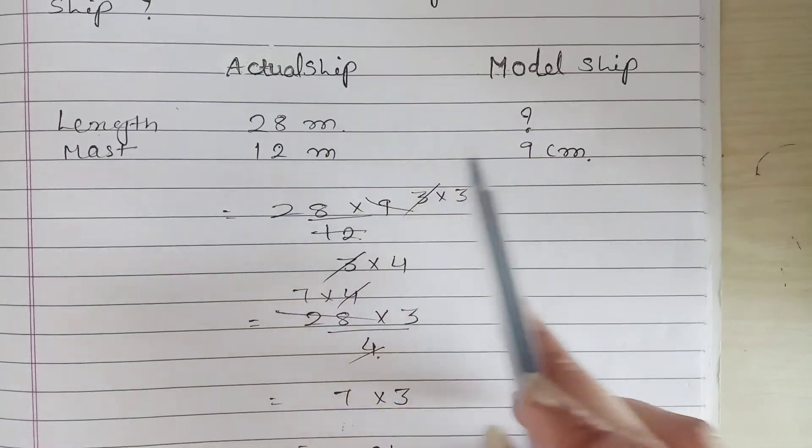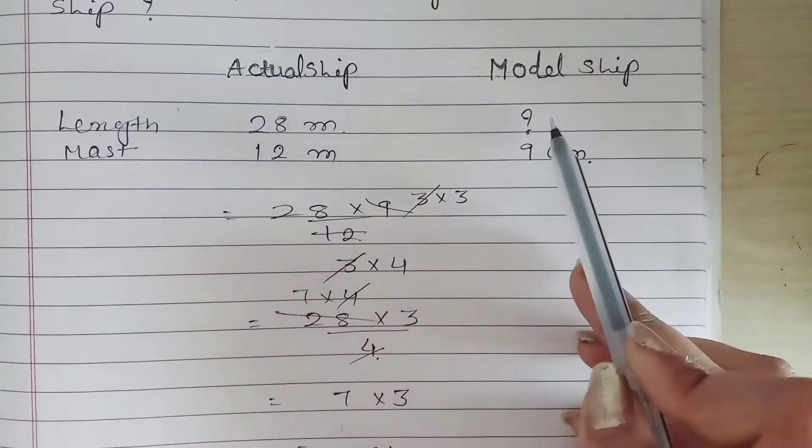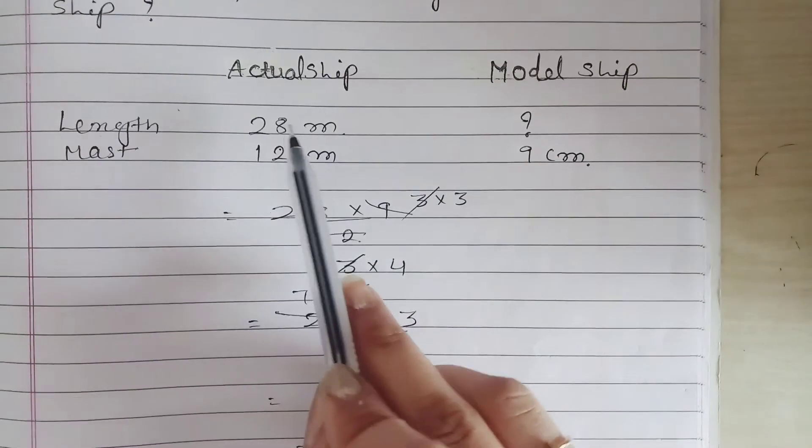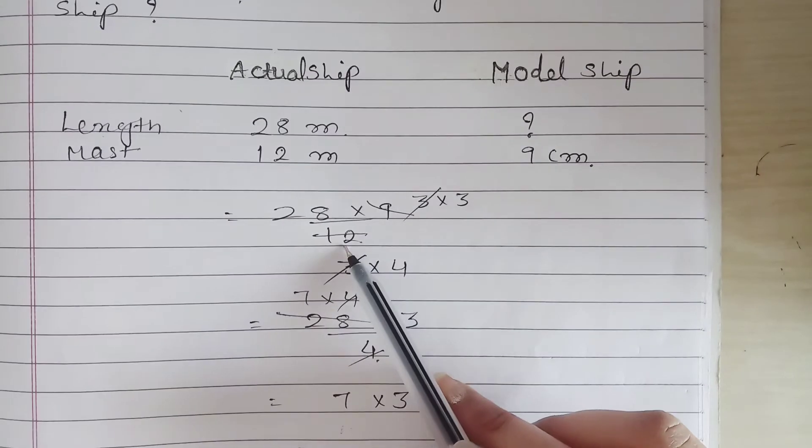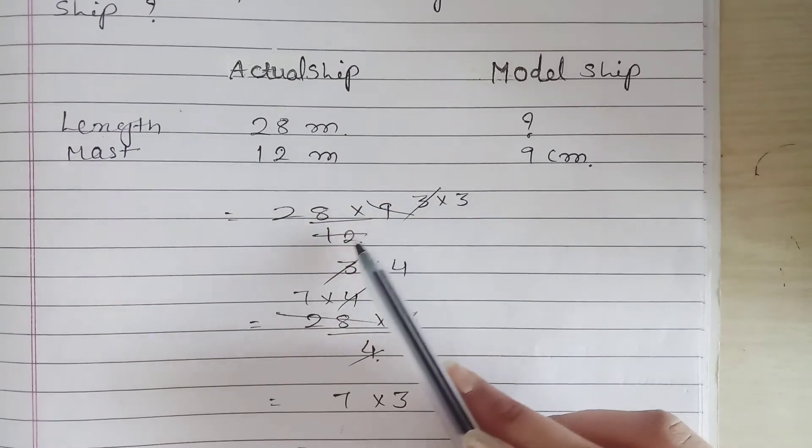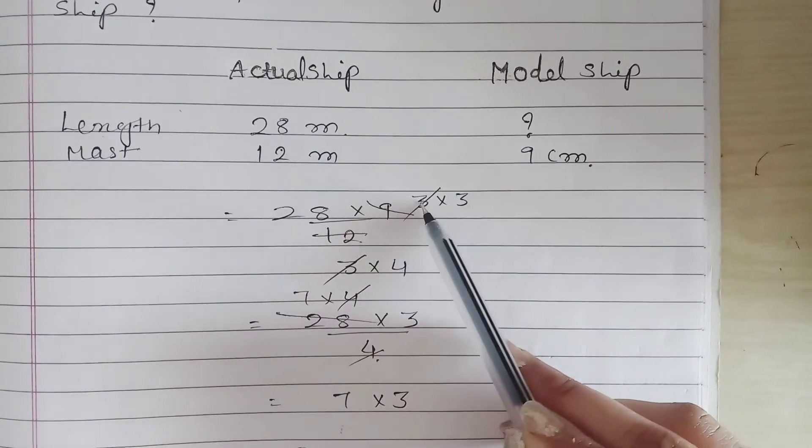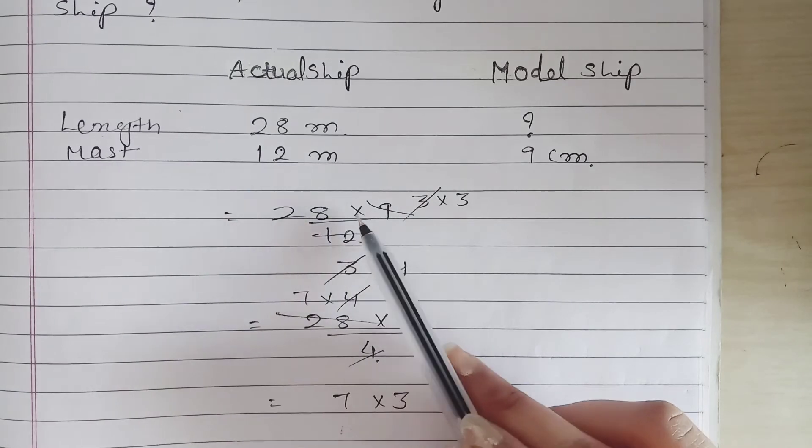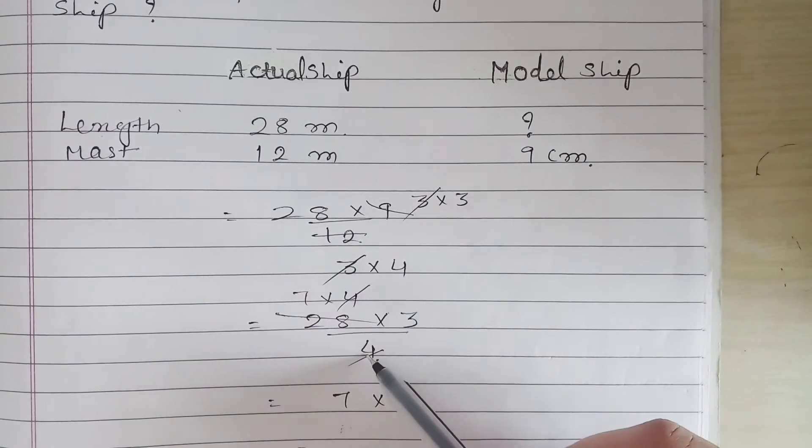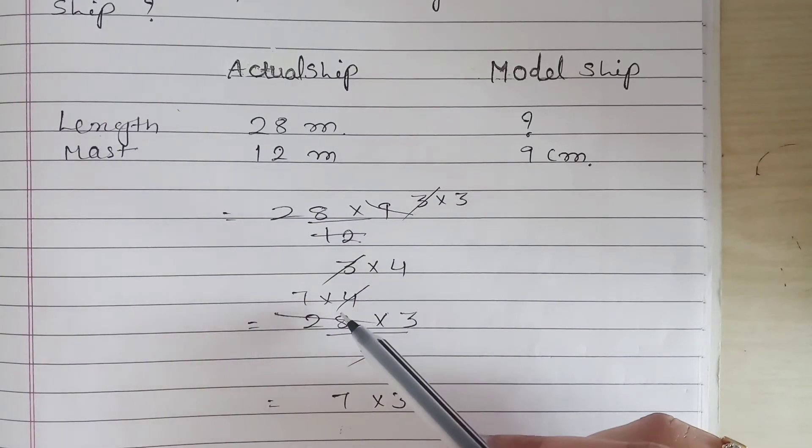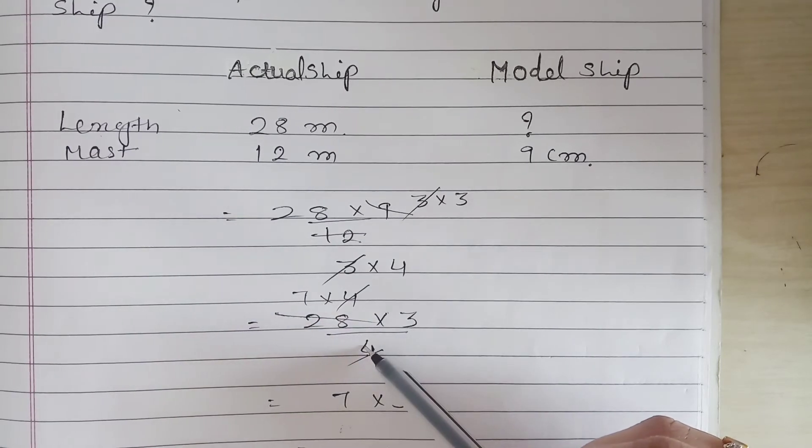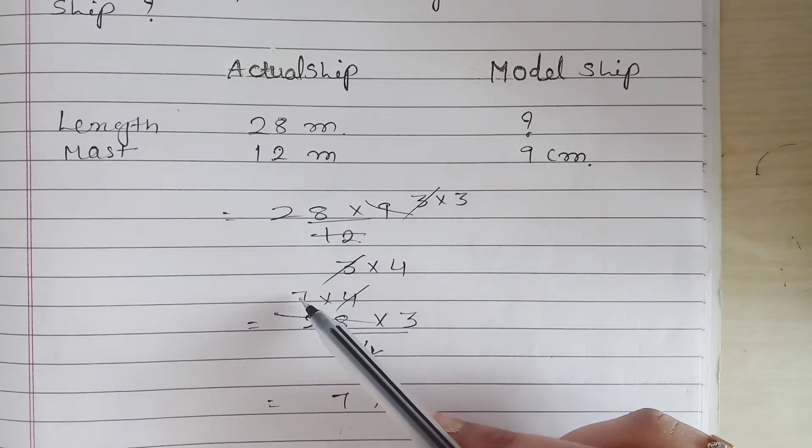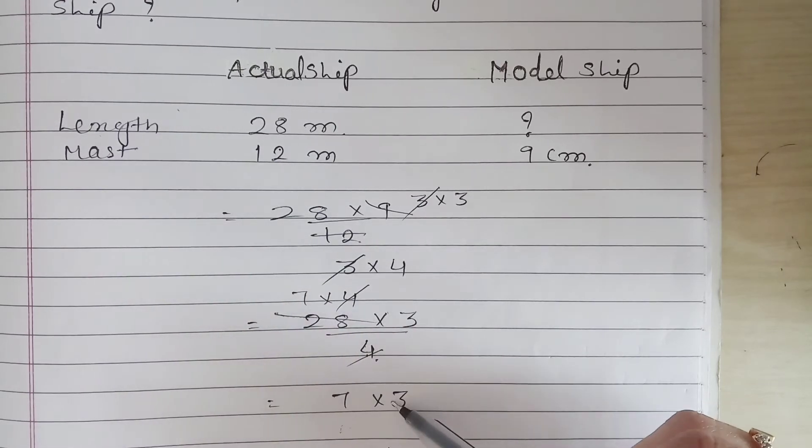So cross multiply karenge: 28 multiplied by 9 upon 12. 3 times 3 is 9, 3 times 4 is 12, so 3 and 3 cut ho jayega. Then 7 times 4 is 28 and here is 4, so 4 and 4 cut. So bachega 7 times 3.